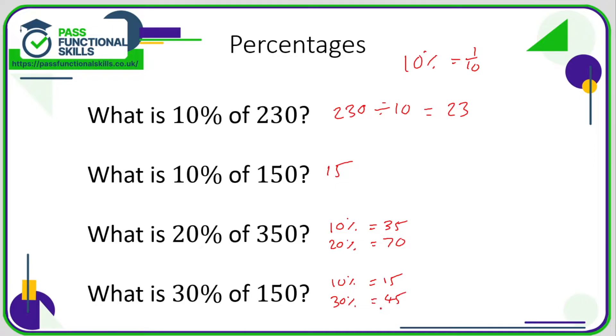So for any multiple of 10%, work out 10% and then multiply it by two for 20%, three for 30%, four for 40%. For 50%, I wouldn't bother using this technique—as discussed previously, just work out half of the amount. For 60%, work out 10% multiplied by six, etc.